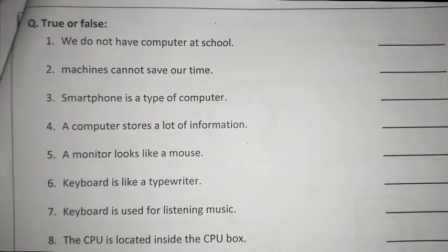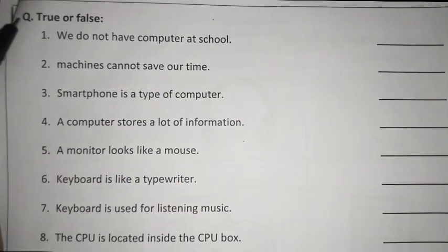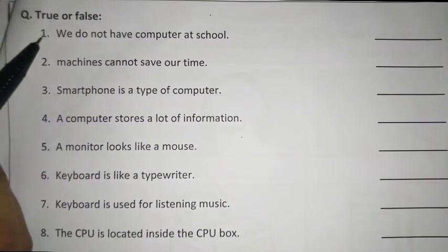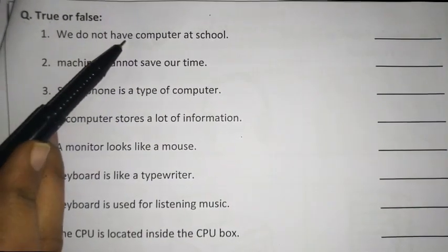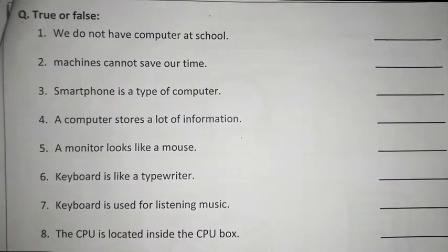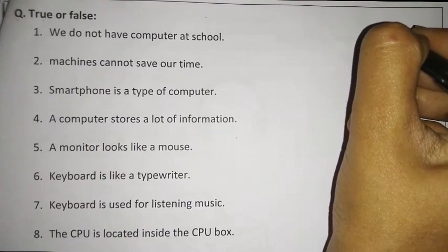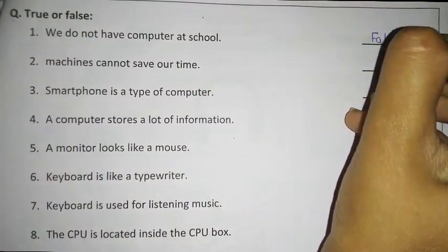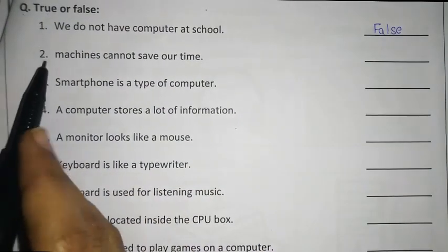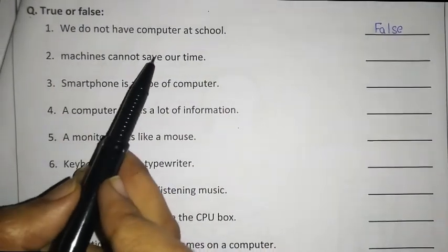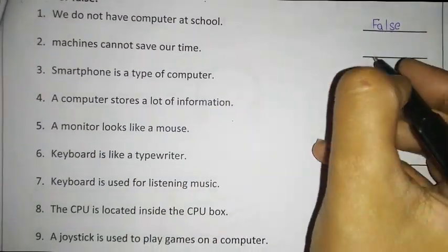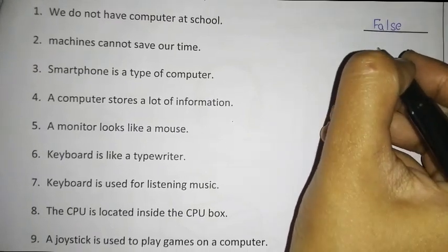Students, now we will turn to question number two — true or false. What is the first question? We do not have computer at school — which is very wrong. We have computer at our school. So write here: false. Second one: Machines cannot save our time — it is also wrong. So what should we write here? False.